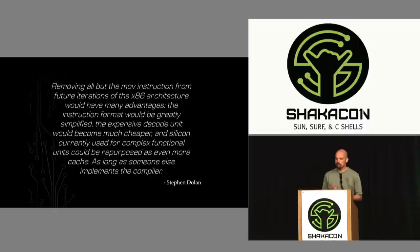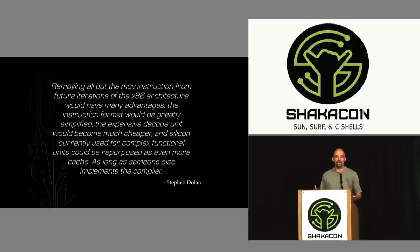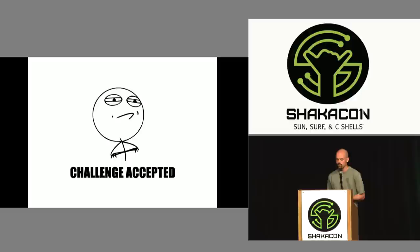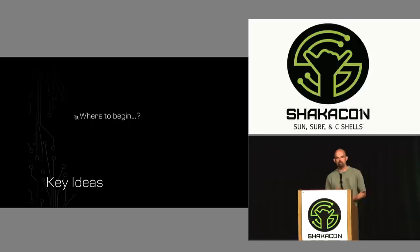Dolan tongue-in-cheek concluded: removing all but the move instruction from future iterations of the x86 architecture would have many advantages — the instruction format would be greatly simplified, the decode unit would become much cheaper, and silicon could be repurposed as cache, as long as someone else implements the compiler. Throughout his paper he was aware he was implementing an academic Turing machine. But when I read that last sentence — 'as long as someone else implements the compiler' — I thought: I'm going to try this. I'll take you up on your challenge, Dolan, to implement a move-only compiler.